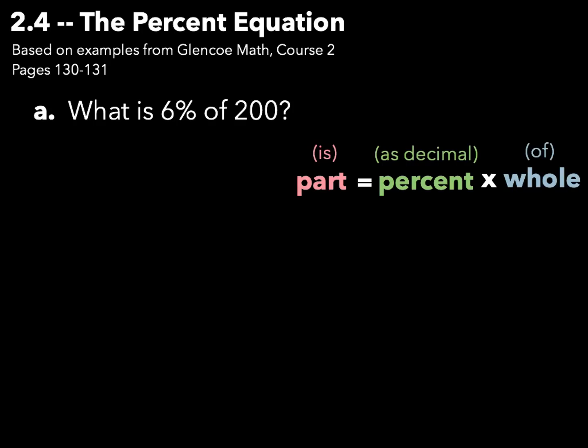Hi, Mr. Richards here. Today's lesson is on the percent equation. That percent equation is: our part equals our percent multiplied by our whole. In other words, our 'is' equals our percent as a decimal multiplied by the 'of.' As we go through these questions, we want to identify what is our part, what is our percent, and what is our whole.